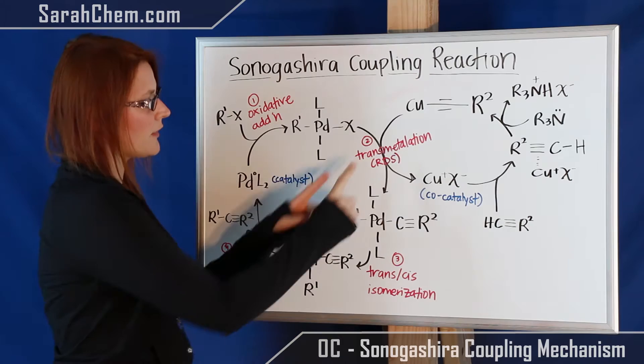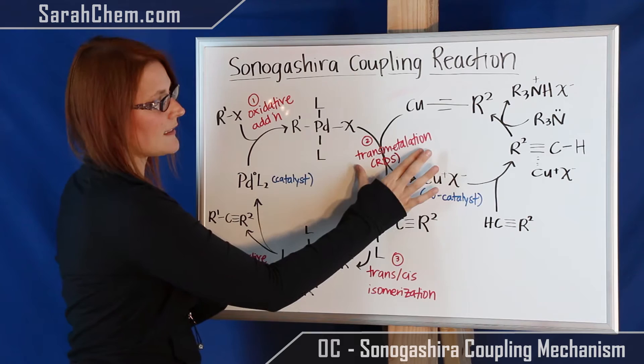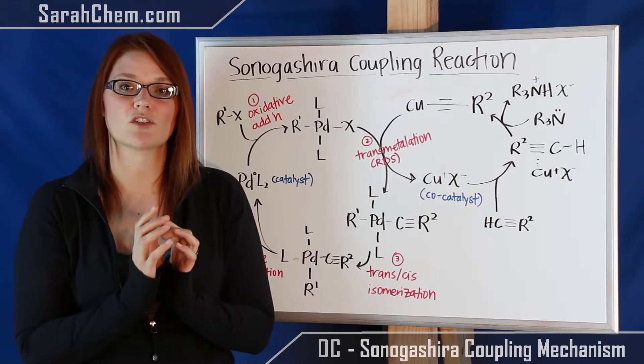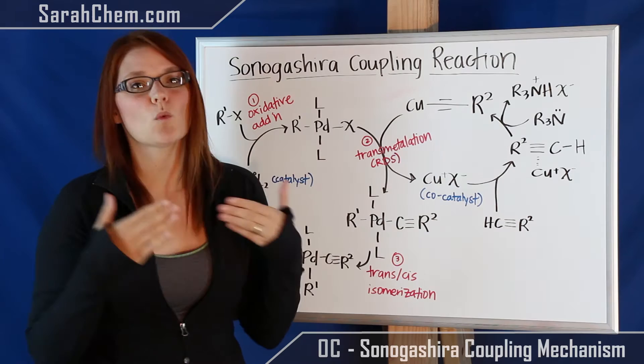If you notice, there are two cycles here. We have a copper cycle and a palladium cycle, and they're both connected at this point. We have two cycles because we have two catalysts: the palladium catalyst and the copper co-catalyst. What I'd like to do is take a look at each cycle individually and see how they come together.